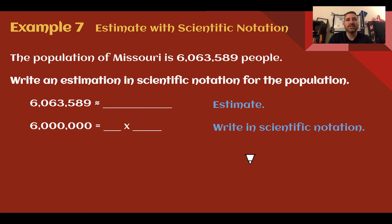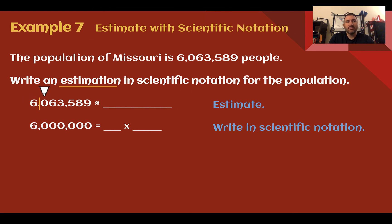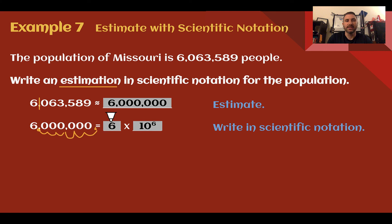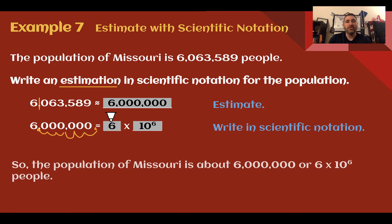Example 7: estimate with scientific notation. The population of Missouri is 6,063,589 people. Write an estimation in scientific notation for the population. For our estimation, we round off so we're left with one digit — our 6. We are not rounding up, so this is approximately 6 million. Then 6 million is just our 6, and we move the decimal 1, 2, 3, 4, 5, 6 places to get to where it actually is: 6 times 10 to the 6th. So the population of Missouri is estimated to be about 6 million people, or 6 times 10 to the 6th.